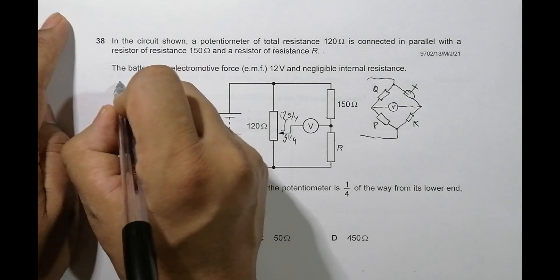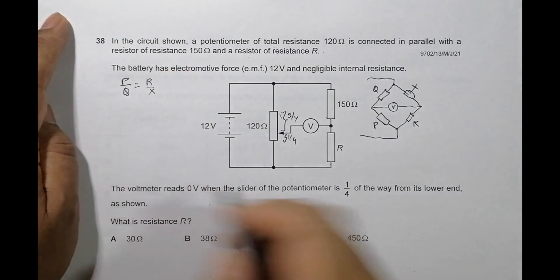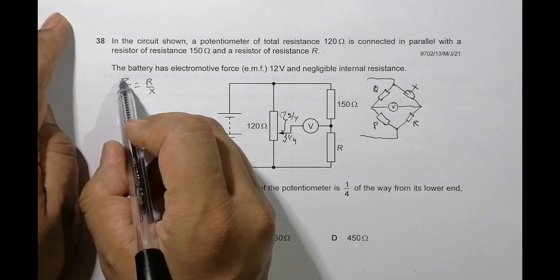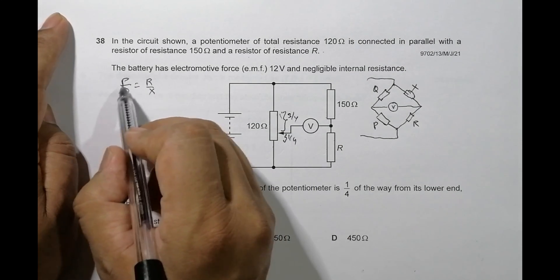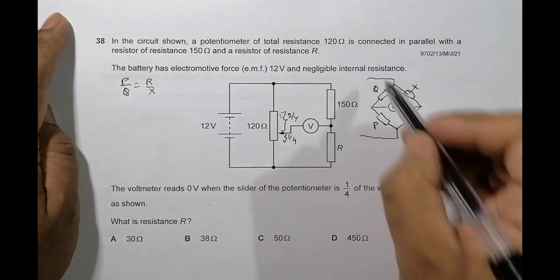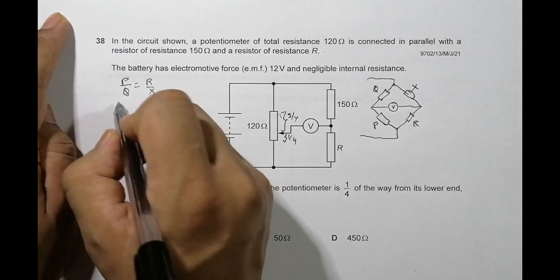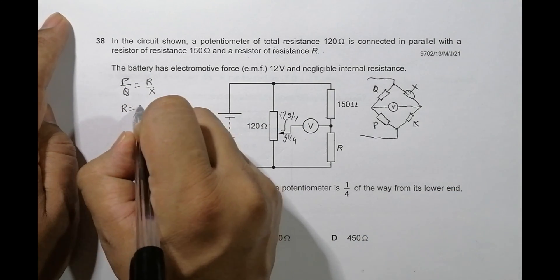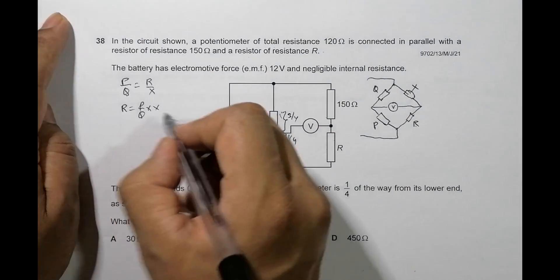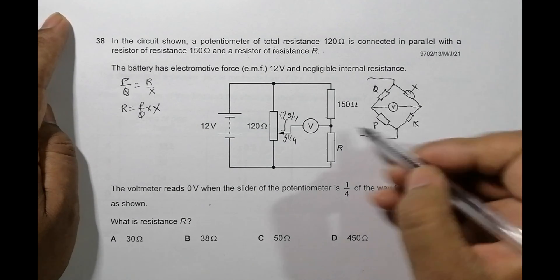Same side here, same side, same upside of this open symbol, and then X, R, then Q, X. We have to find the value of R, so I will use R is equal to P by Q into X.